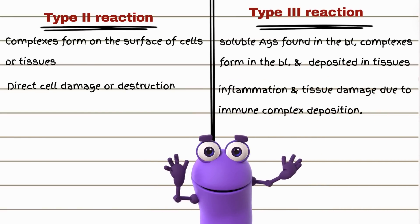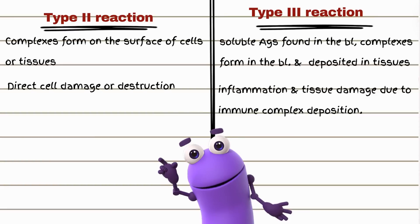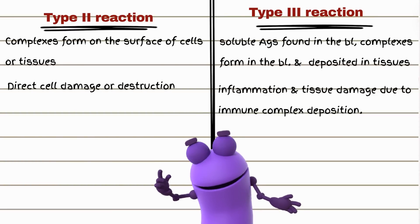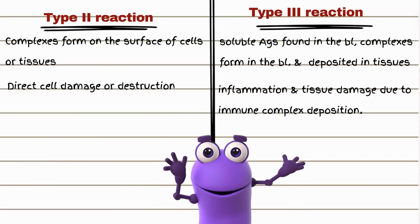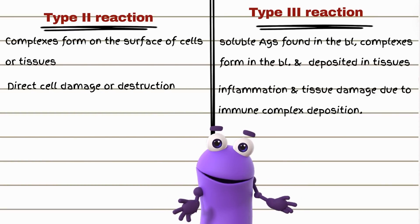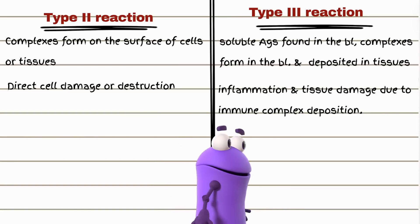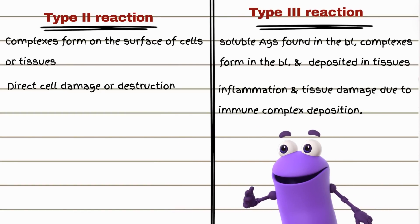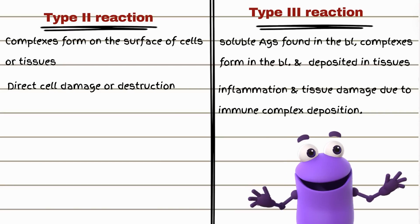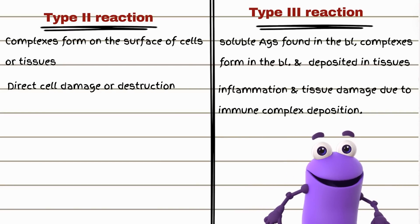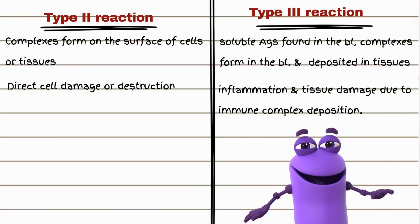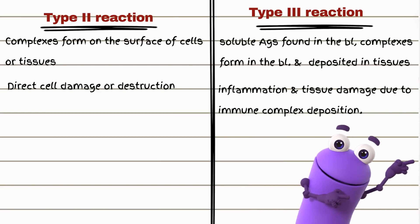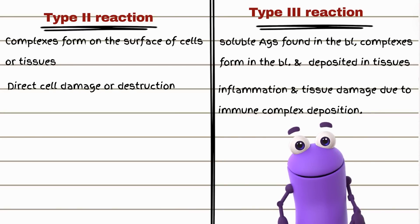Soluble antigens can induce type 1 reactions — so what does type 3 have to do with soluble antigens? The type of hypersensitivity reaction and the antibody produced depend on several factors, including the nature of the antigen, the context of the immune response, and the cytokine environment.